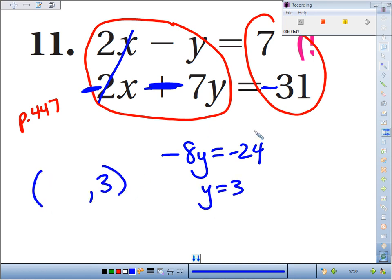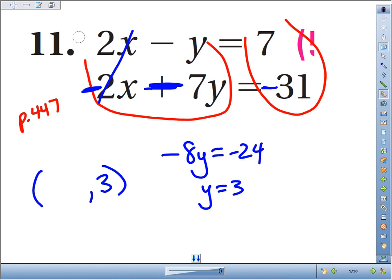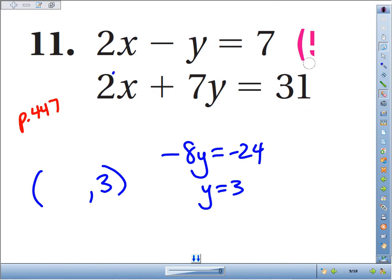So we've got the y coordinate. Let's go back and find the x. Go back to any of your equations. It could be one of the two originals, or it could be the one with the signs you flipped. It really doesn't matter.